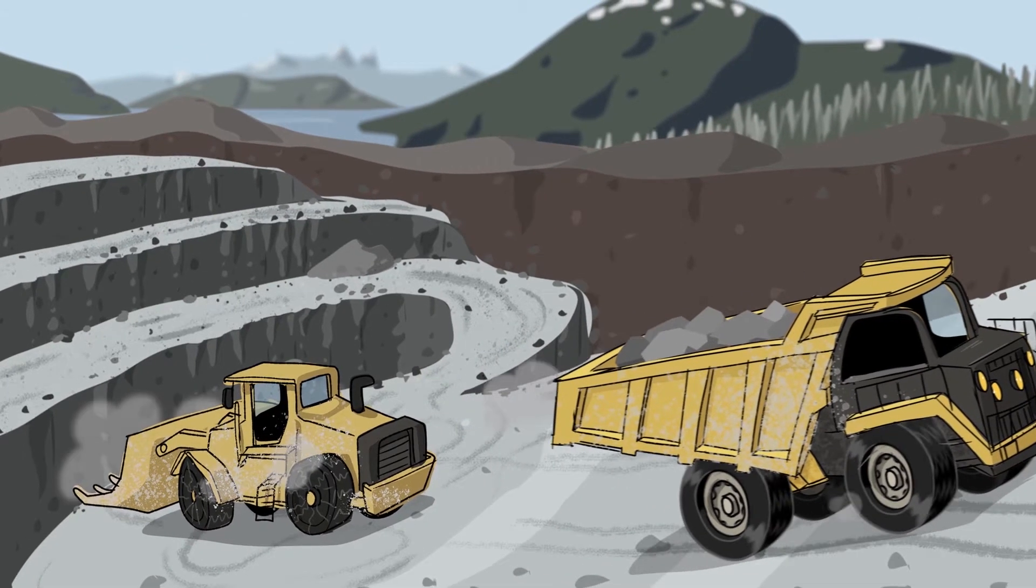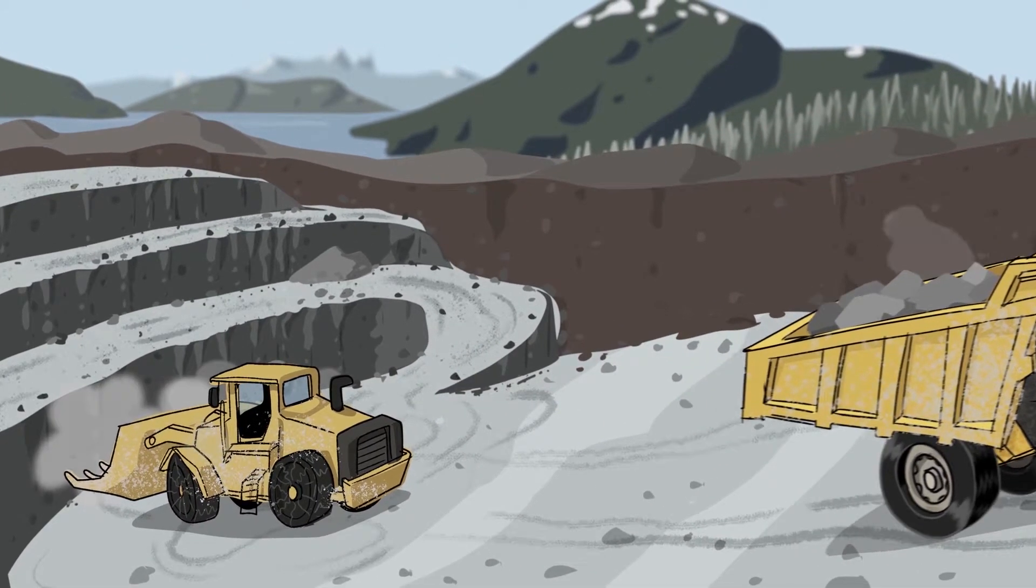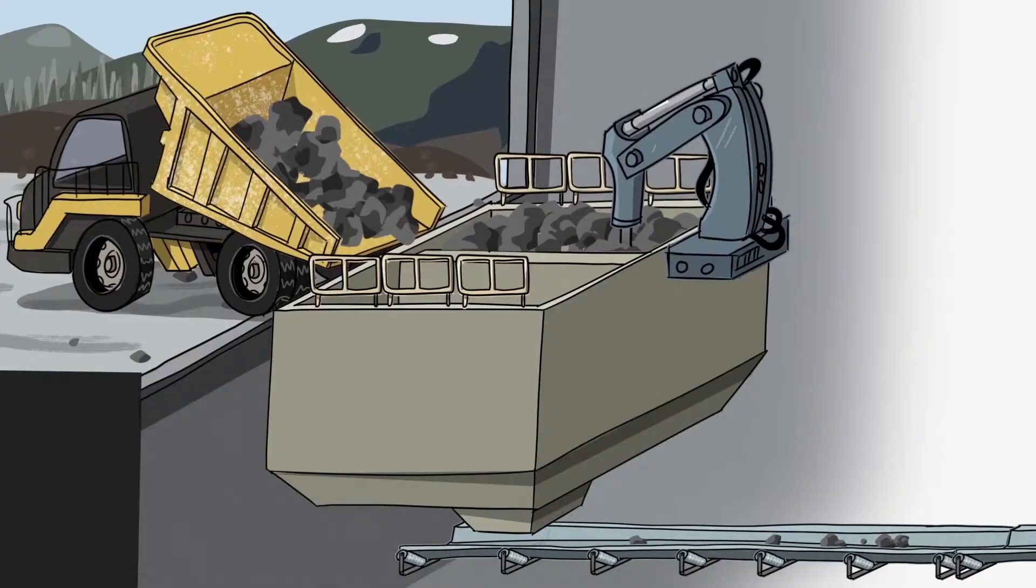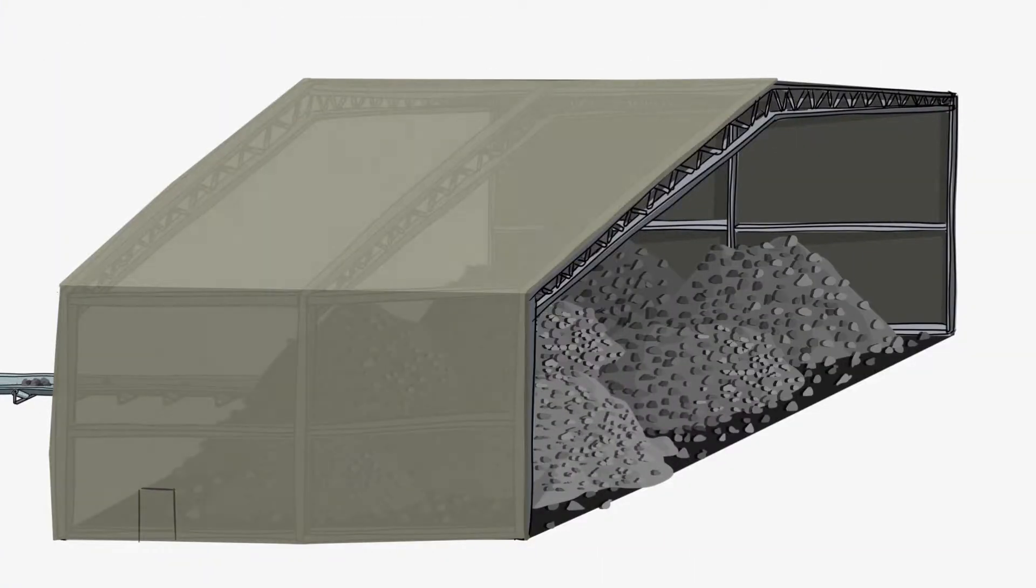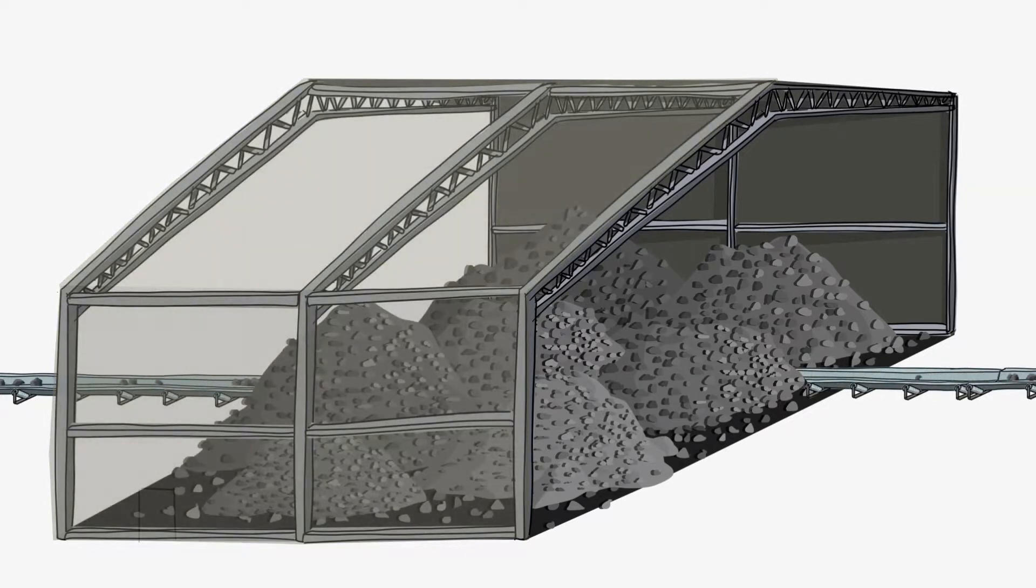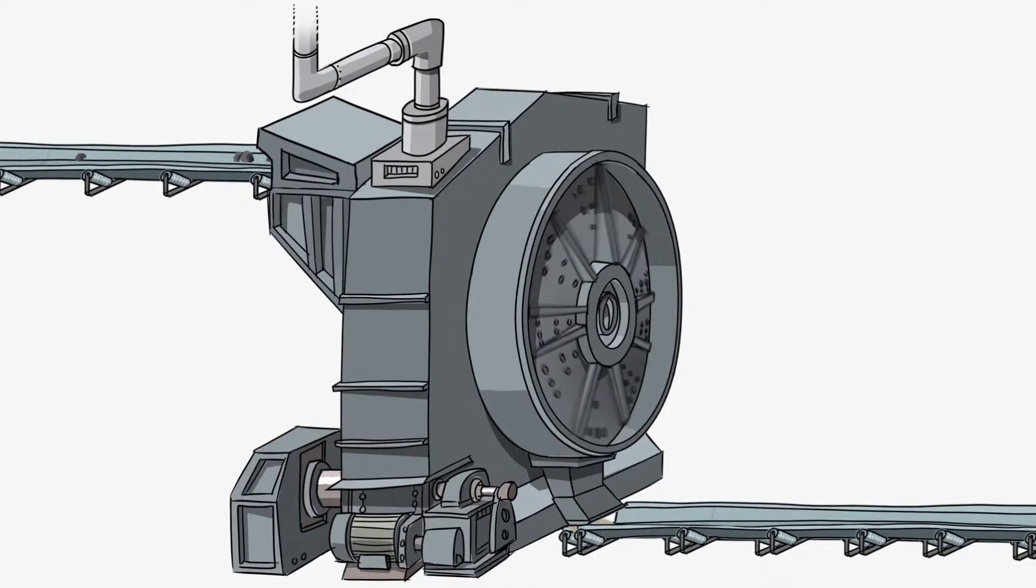Limestone, the raw material used for cement production, is extracted from either quarries or mines. It is then crushed and stored. Once it leaves the storage, the limestone is transported to a mill where it is ground into a fine powder called raw meal.